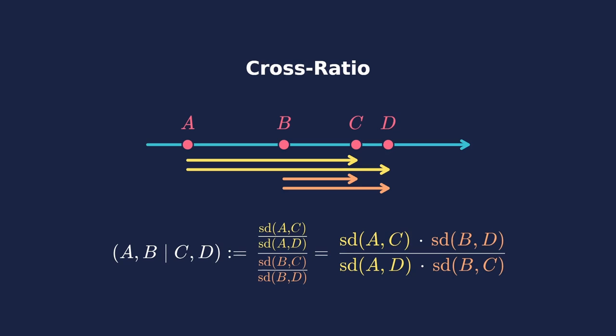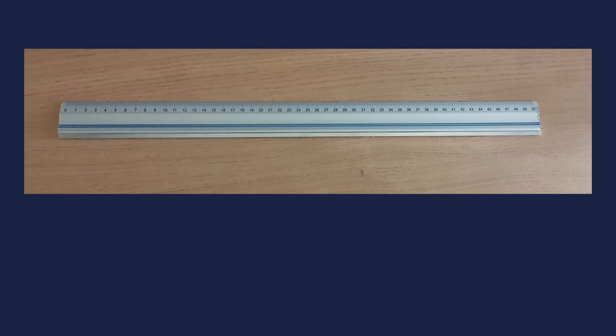Now, I claim that the cross ratio stays the same under projective transformations. Instead of a proper proof, however, I want to show you a little experiment you can do on your own to test this hypothesis. And it will also serve as an example to see how signed distances work.